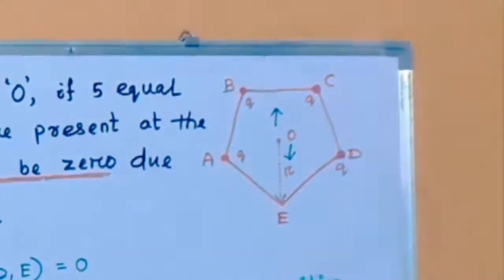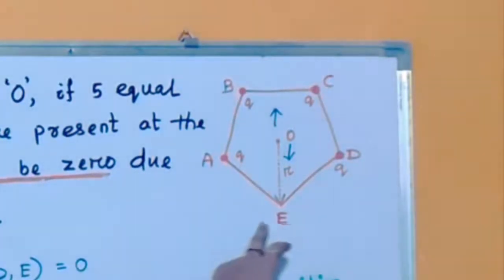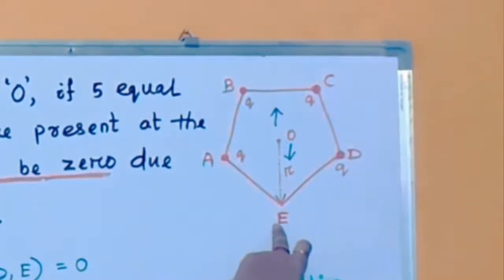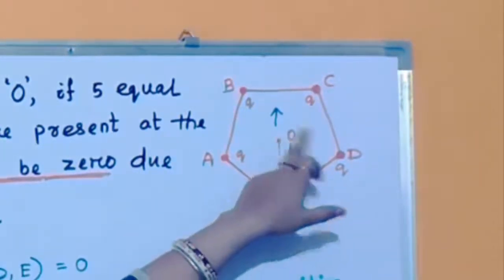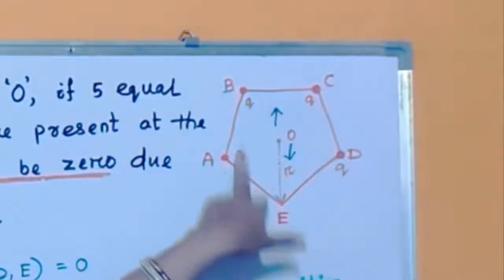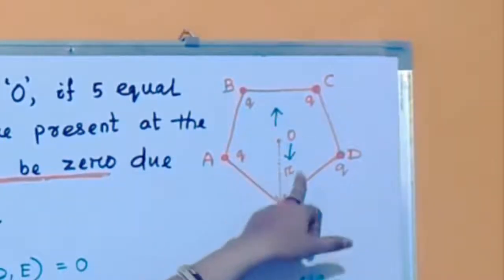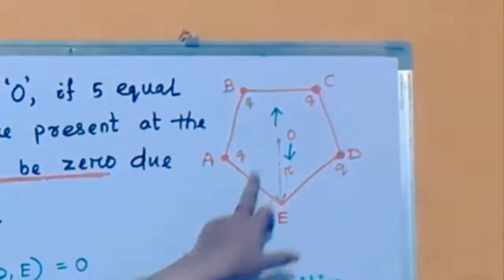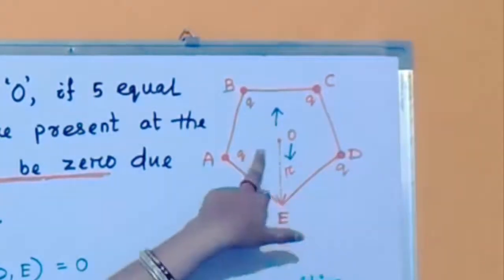So here we use this concept. If you assume at point E, if you assume a Q charge is placed at point E, then electric field at O due to this symmetry is zero.